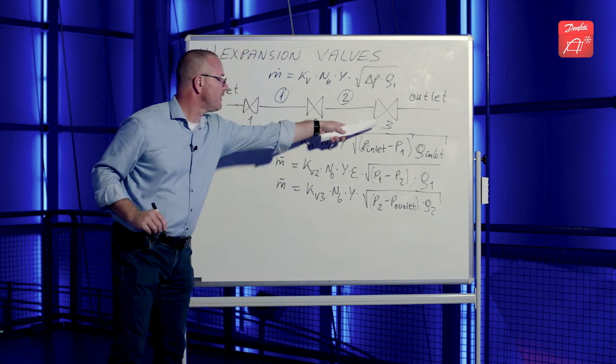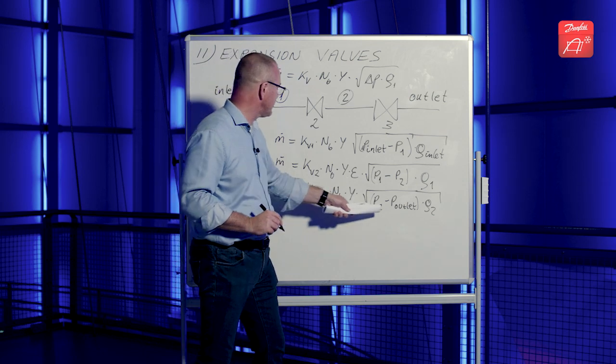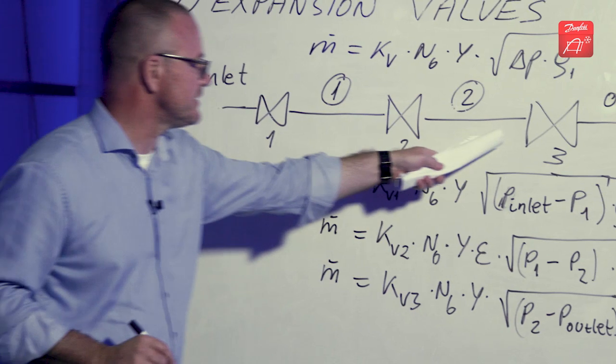For the outlet valve, we just have the KV value, constant, net expansion factor, pressure difference, and the density at point two at the inlet of this valve.